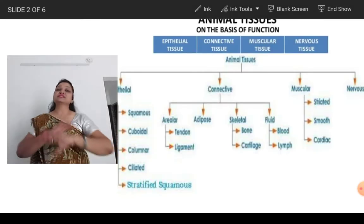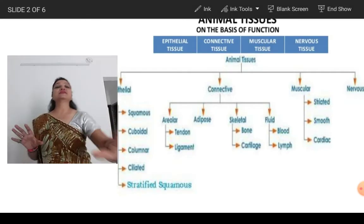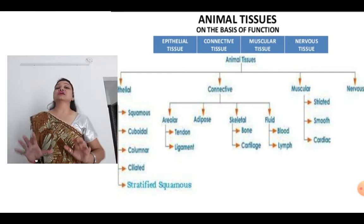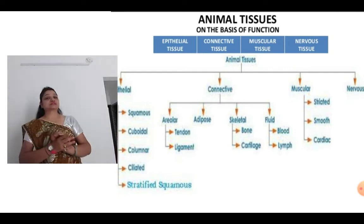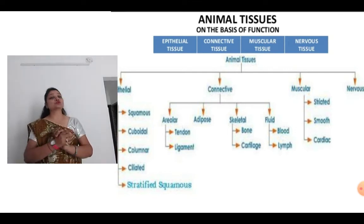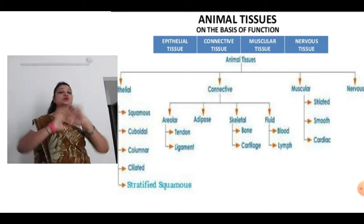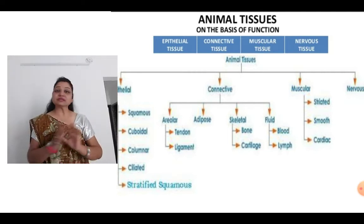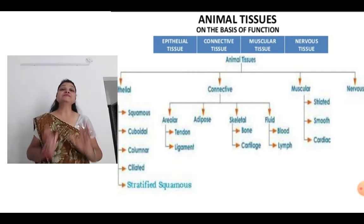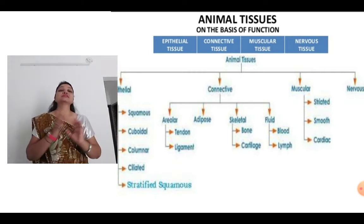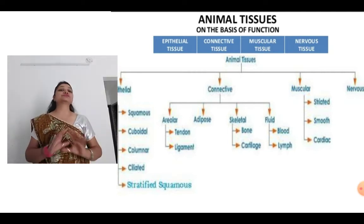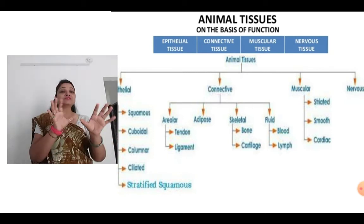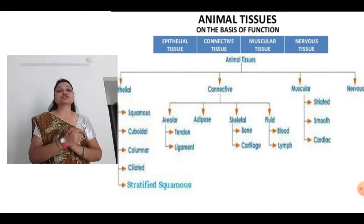Because we have discussed everything about the plant tissues, now we will discuss about the animal tissues. Hopefully all plant tissues and their subcategories are understood well. Starting with the animal tissues today, I would like to tell you a brief overview through this flowchart.